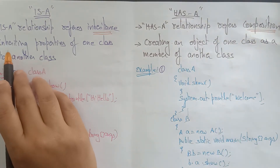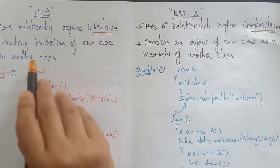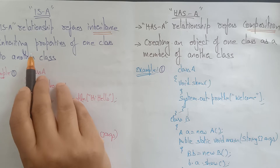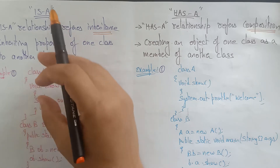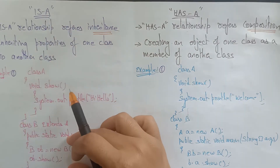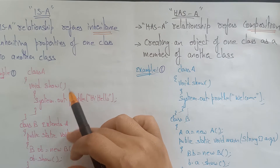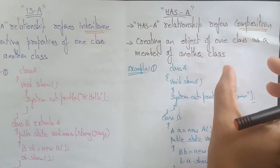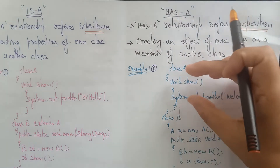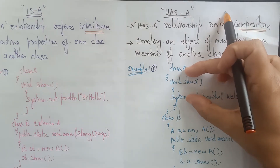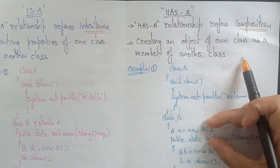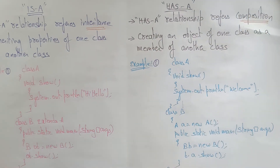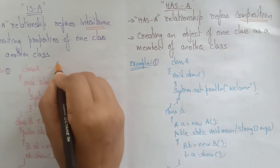The 'is-a' relationship means inheriting properties of one class into another class. When properties are inherited to another class, we call it 'is-a'. Whereas creating an object of one class as a member of another class is the 'has-a' relationship.